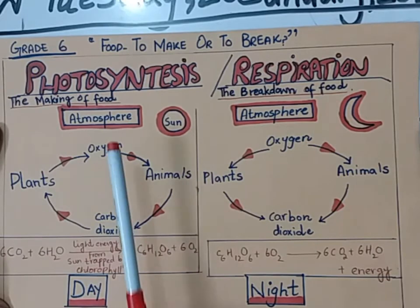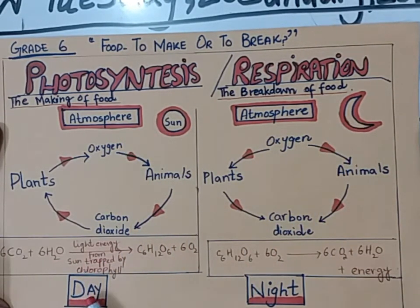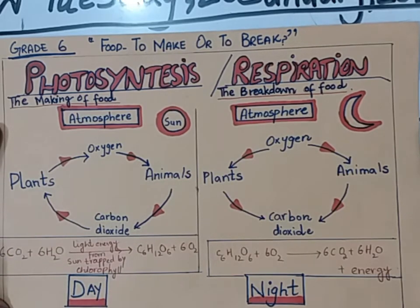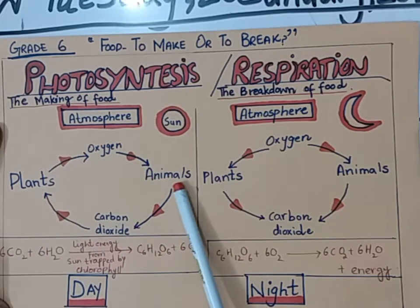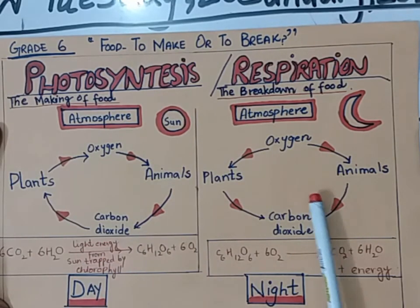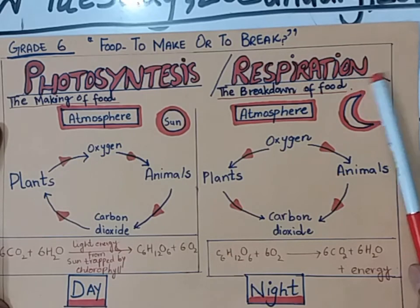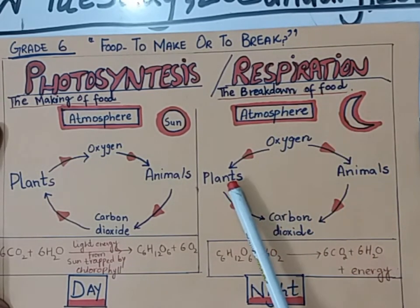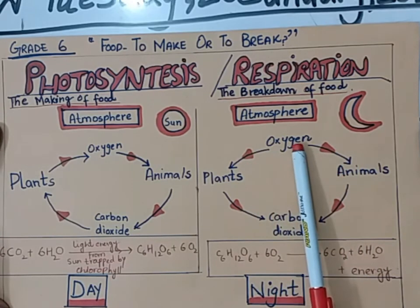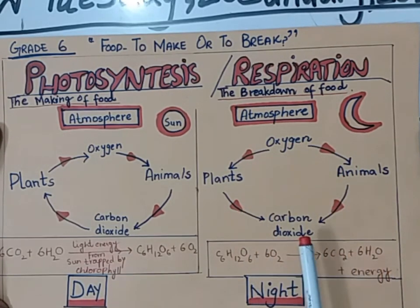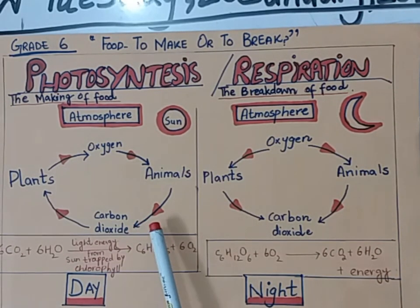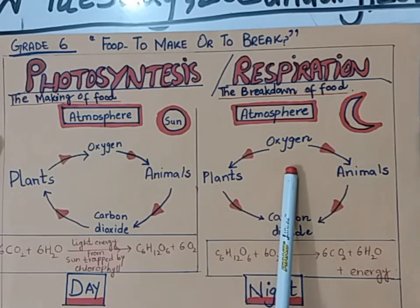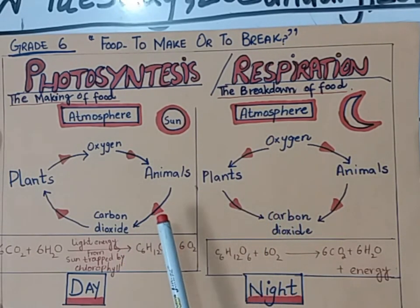So this is the difference between photosynthesis and respiration: photosynthesis occurs during the day and respiration occurs during the night. To summarize: during the day, photosynthesis takes place and plants release oxygen while animals release carbon dioxide. During the night, respiration takes place, which is the breakdown of food, and both plants and animals utilize oxygen and release carbon dioxide into the atmosphere. Students, you have to draw this diagram on your copies.